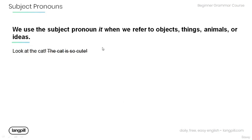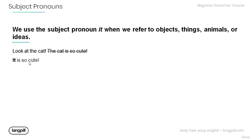Let's look at another sentence: 'Look at the cat — the cat is so cute.' Note that the subject pronoun 'it' is used when we refer to objects, things, animals, or ideas. Try to avoid repetition in this sentence by using the correct subject pronoun: 'It is so cute.'